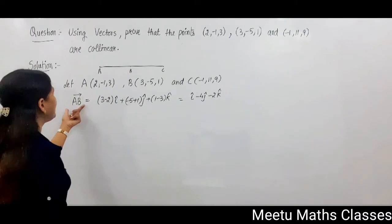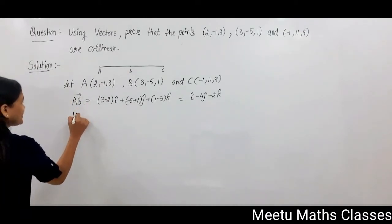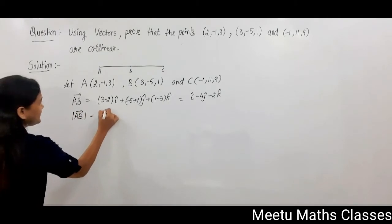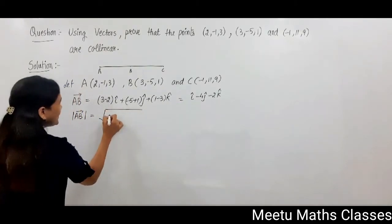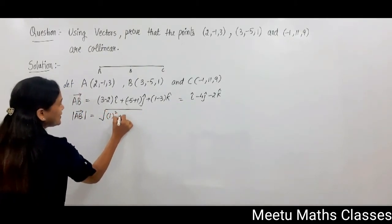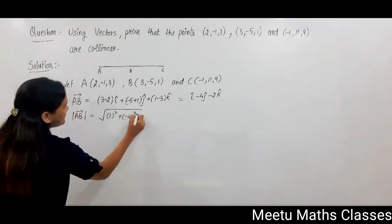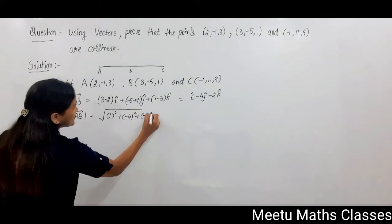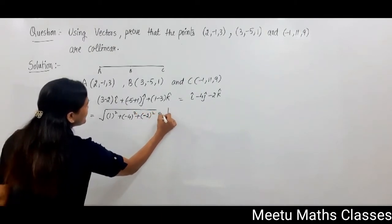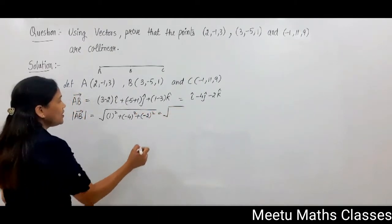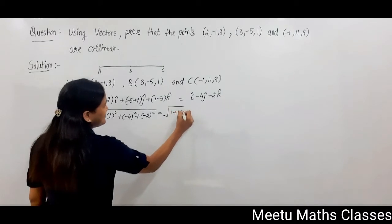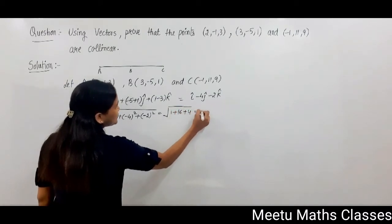Now from this vector we can find out the magnitude of AB, and magnitude of AB will be √(1² + (-4)² + (-2)²), and that equals √(1 + 16 + 4), that is √21.